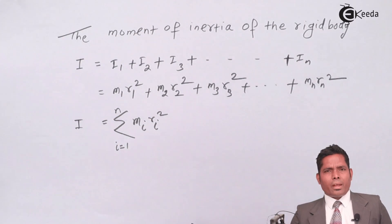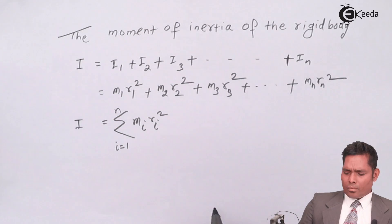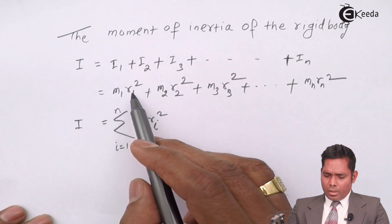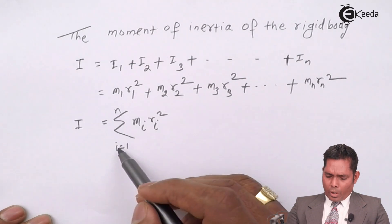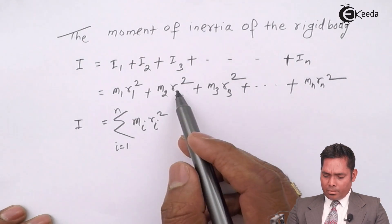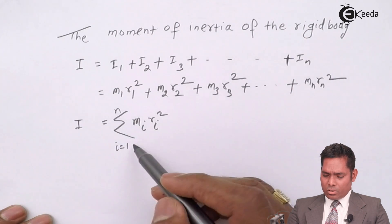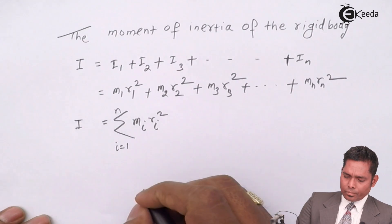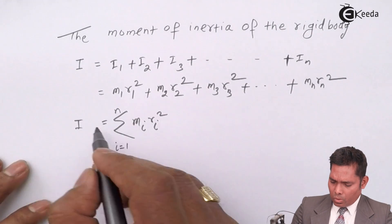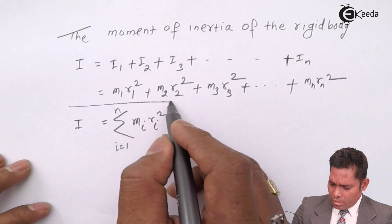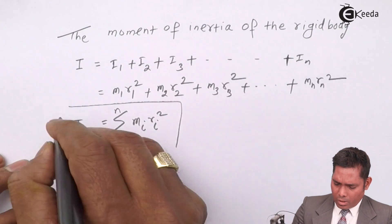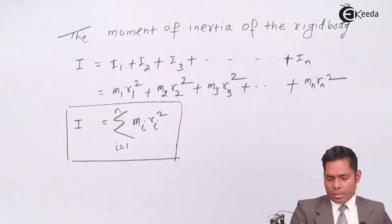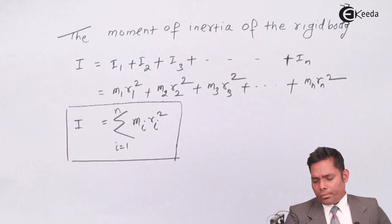The index i varies from 1 to n. Starting from 1, it goes to n. When i equals 1, we get the first term; i equals 2 gives the second term; and so on — sum means addition of all these terms, with n being the last one. So this summation is the formula for the moment of inertia of a rigid body. This is the final expression.